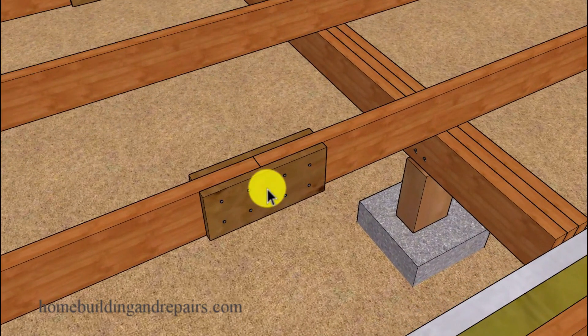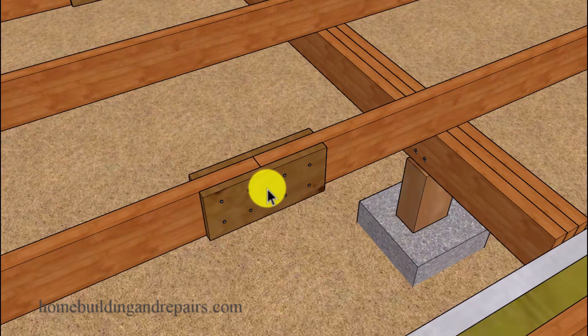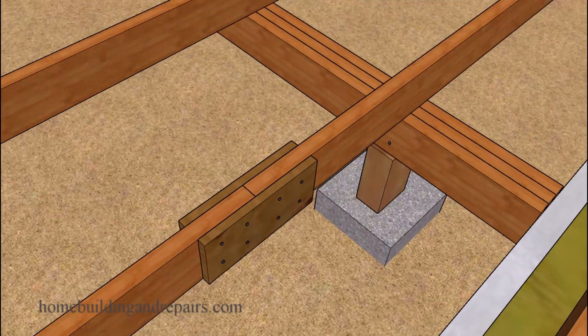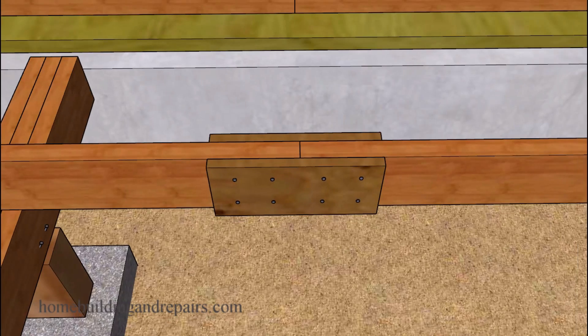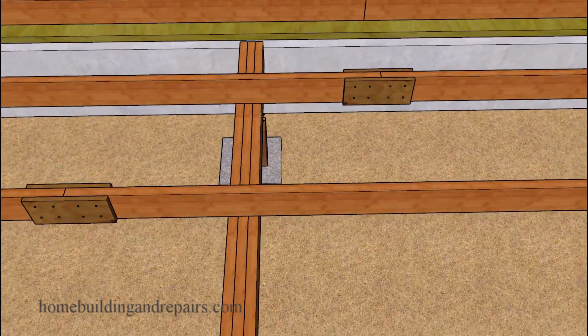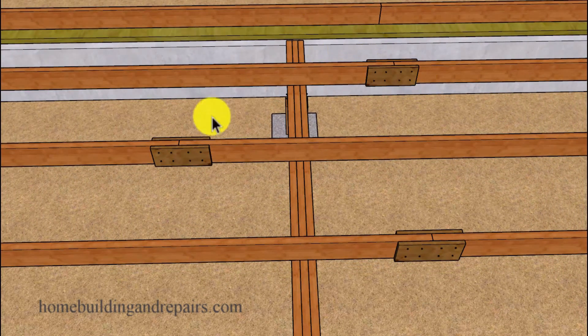You could use some type of gusset, plywood, construction standard lumber, and I'm guessing even some type of building hardware might work to connect the two joists together. Of course, these breaks will be staggered to increase the floor strength.